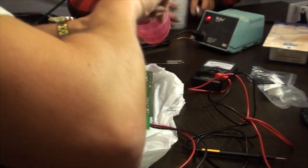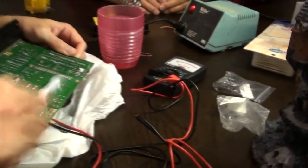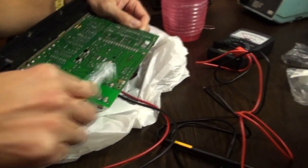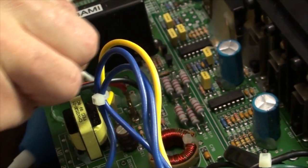Using isopropyl alcohol and a toothbrush, clean the PCB to remove any particles from the broken capacitor or any electrolyte that may have sprayed out during the explosion.